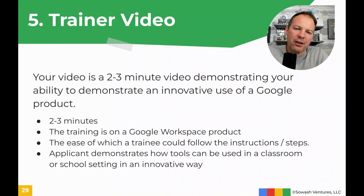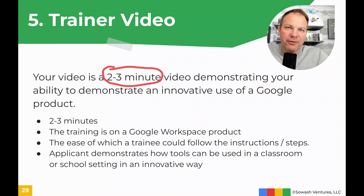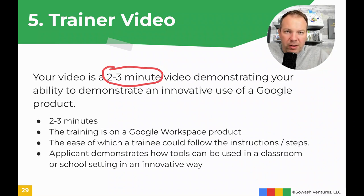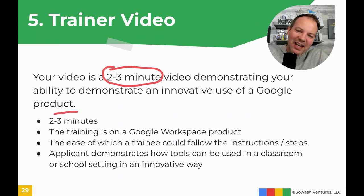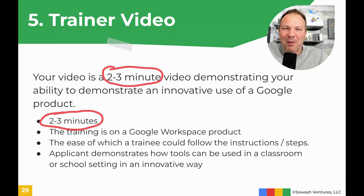The final element of your trainer application is a video — a two to three minute video where you demonstrate your ability to use a Google tool in an innovative way. For example, you might show how to use the canned response feature of Gmail in a classroom environment, or how to use the question tool of Google Classroom in a creative way. The video should be short; you don't need fancy equipment. Google is not as concerned about production quality as they are about content and your ability to communicate effectively. One of the biggest mistakes people make is going over that three-minute timeframe — reviewers have to review hundreds of applications and don't have time for a five-minute video. If you can get it done in two minutes, go for two. There are no bonus points for using all three minutes.